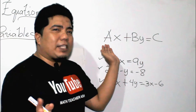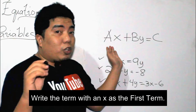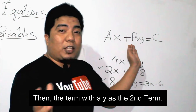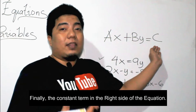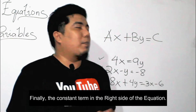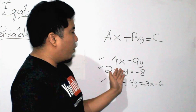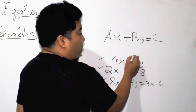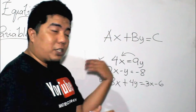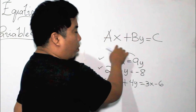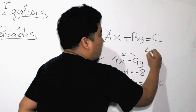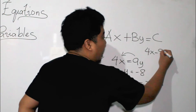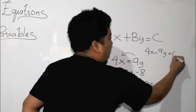Now, let us go to how to transform these given equations into the standard form ax plus by is equal to c. The technique here is very simple. First, you will write the x term first, then the y term, and then finally the constant term — the numbers without a variable. For 4x is equal to 9y, this 9y will be transposed to the other side, giving us 4x minus 9y is equal to 0.